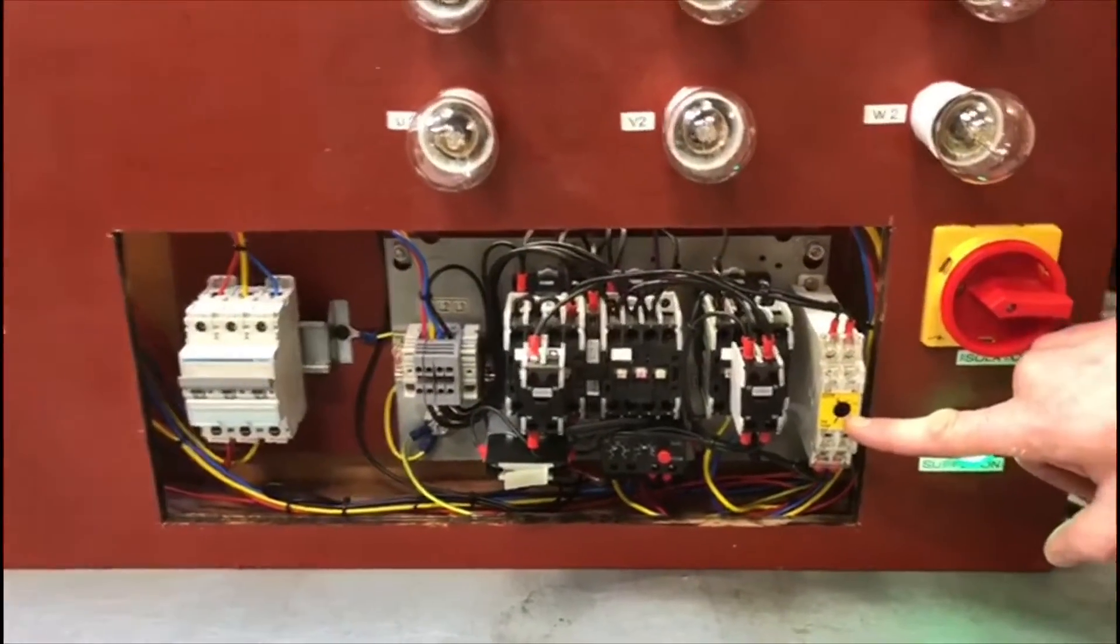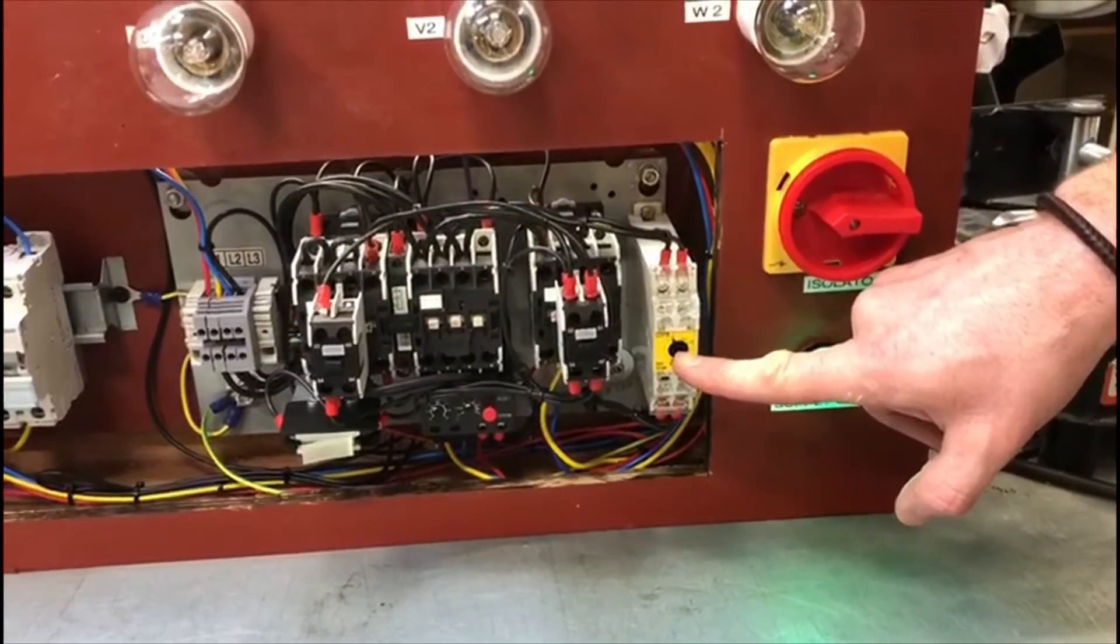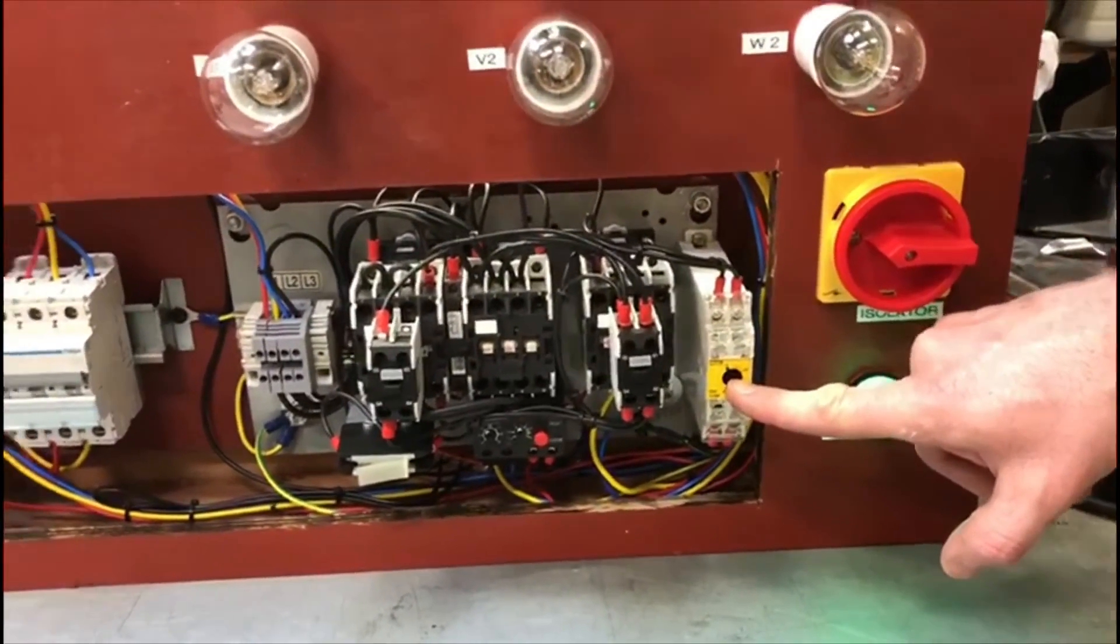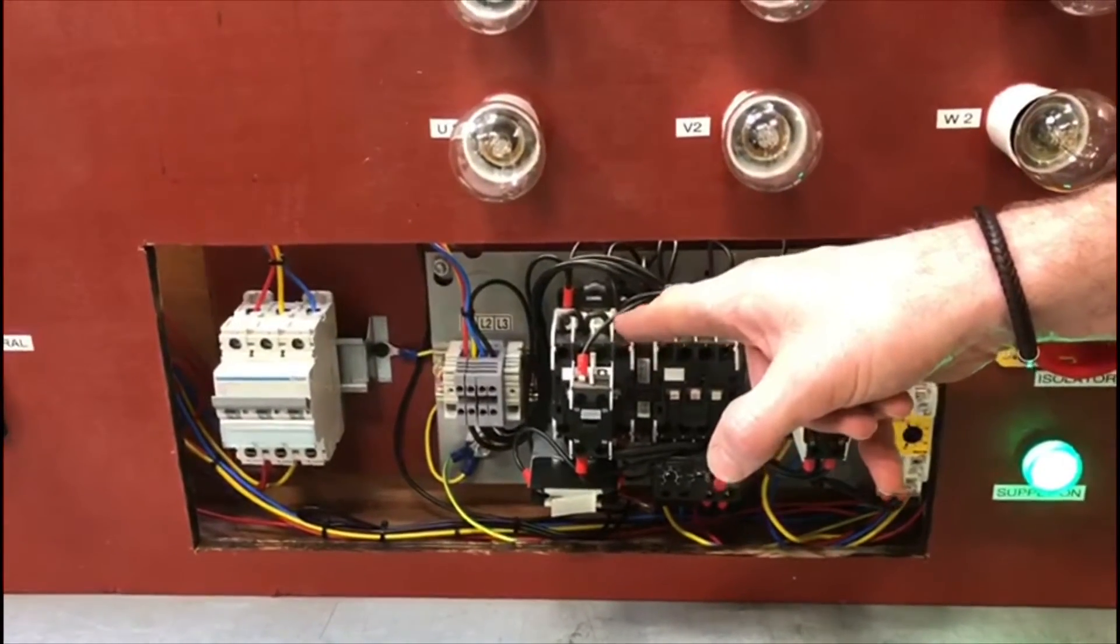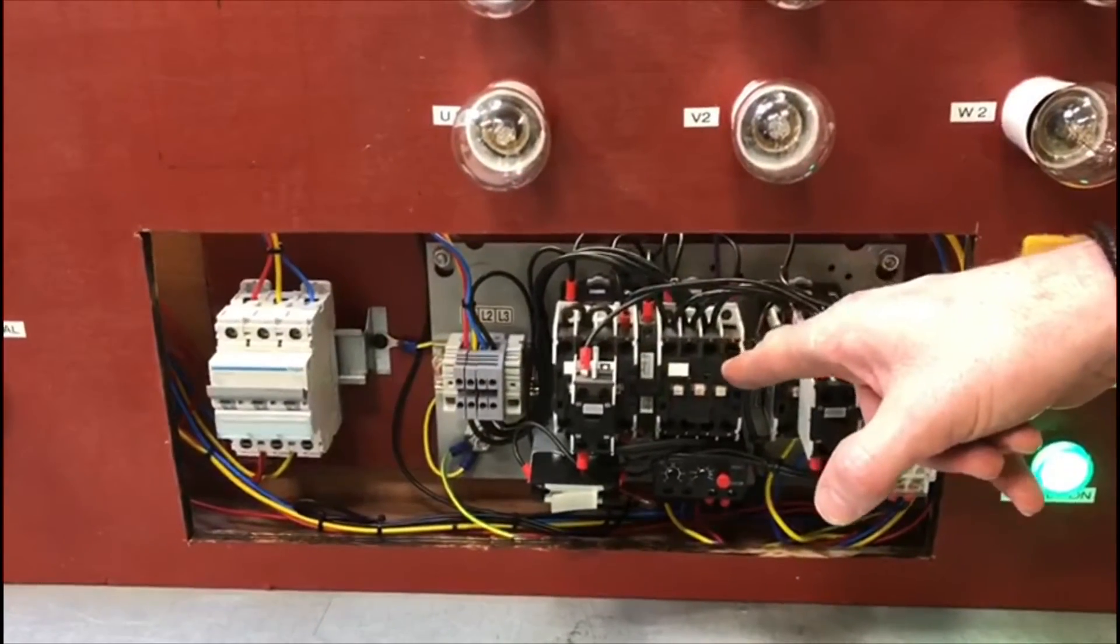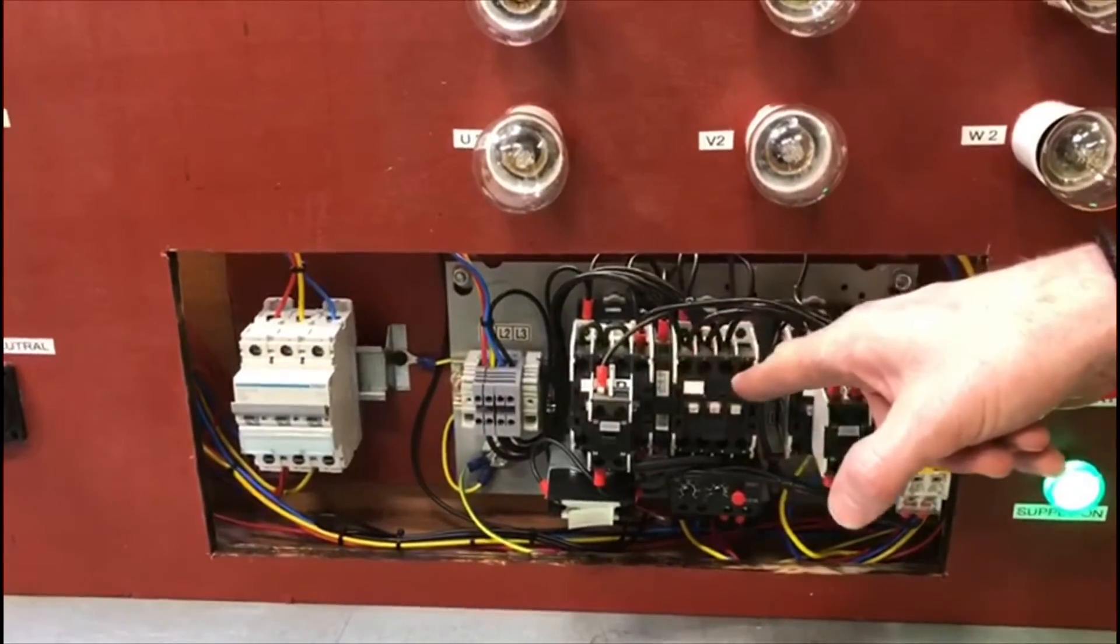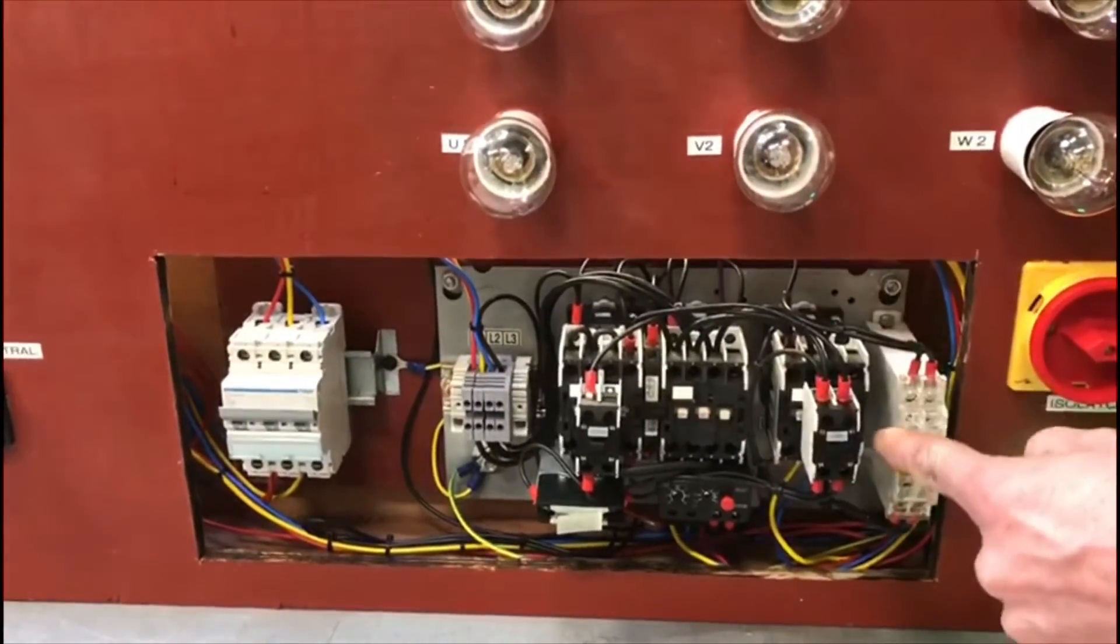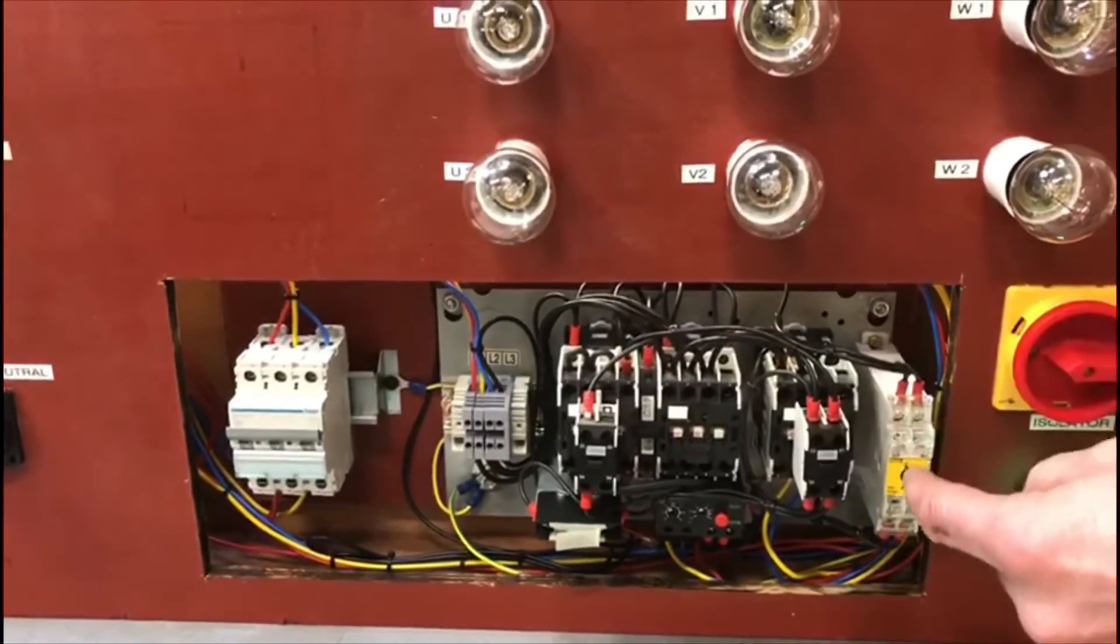After a duration, and I believe I've set this to about 20 seconds, this is the changeover time switch, so after about 20 seconds after starting it, this contactor will pull out and this contactor will pull in. So this being the star contactor, this one being the delta.